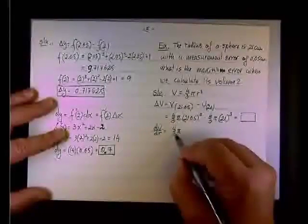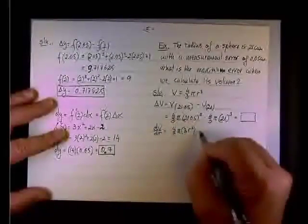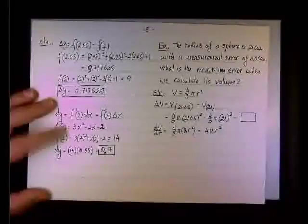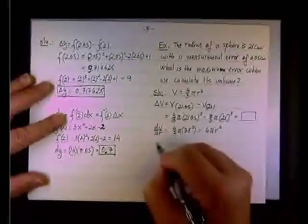I'm sorry, 4 over 3 pi, and then you'll have 3 r squared, or 4 pi r squared, which is the surface area, and I believe we talked about it a couple of days ago.